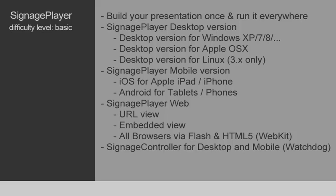Both the Signage Player desktop and mobile versions were designed for dedicated playback. They work very efficiently and have full remote control so you can manage them from the Signage Studio. The Signage Player web version is used mostly to preview the presentation and share it with others. You can simply copy and paste the URL to a colleague, and they'll be able to watch the same presentation built for both mobile and desktop, so you never have to recreate your work.